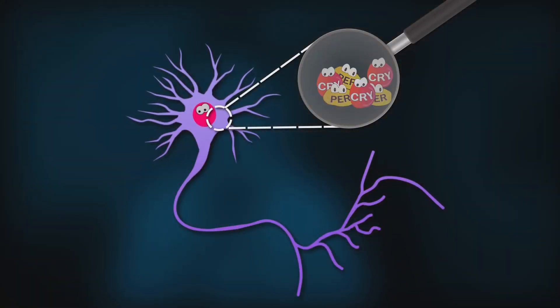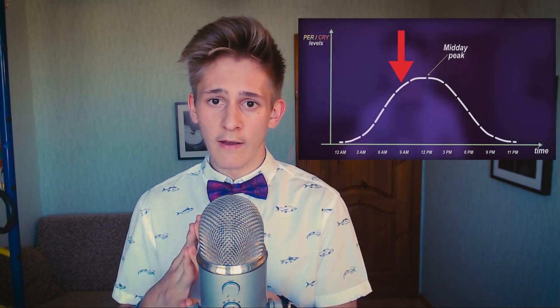But what about these light cues? Every time the neuron fires up, it increases the production of per and cry. So if you are exposed to bright light in the early morning, you are shifted towards midday and it helps you wake up. In contrast though, if it happens in the late evening, you are also shifted towards midday and it can screw up your sleep.